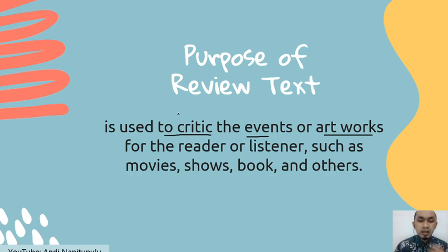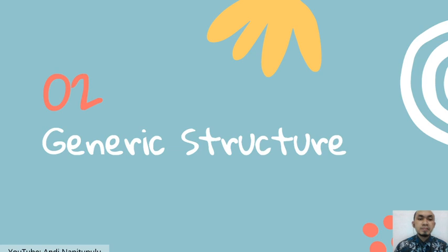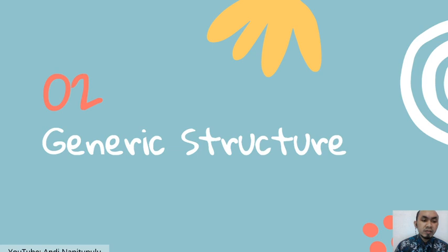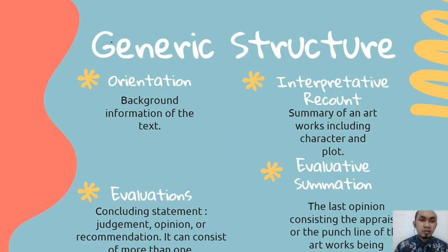The next topic is about generic structure, because if you want to review something in your written text you need to know the steps — what will be in the first paragraph and up until the last paragraph. That's why we need to learn about generic structure. The first one is orientation, which will be the first paragraph.